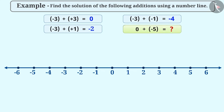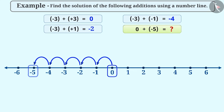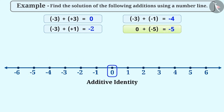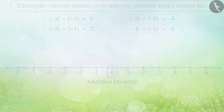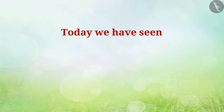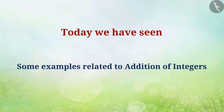Now let's talk about addition of 0 and minus 5. When any number is added to 0, we get the same number. This means the result is minus 5. Thus, 0 is called the additive identity. Today, we have seen some examples of addition of integers. In the next video, we will learn the misconceptions related to them.